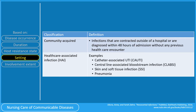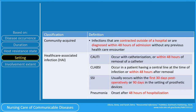Common examples of nosocomial infections are urinary tract infections, bloodstream infections, skin and soft tissue infections, and pneumonia. Take note: urinary tract infection is the most common nosocomial infection. In addition, nosocomial infections can either develop during a client's stay in a facility or manifest after discharge. The table in this slide shows the different definitions of nosocomial infections according to their time frame.